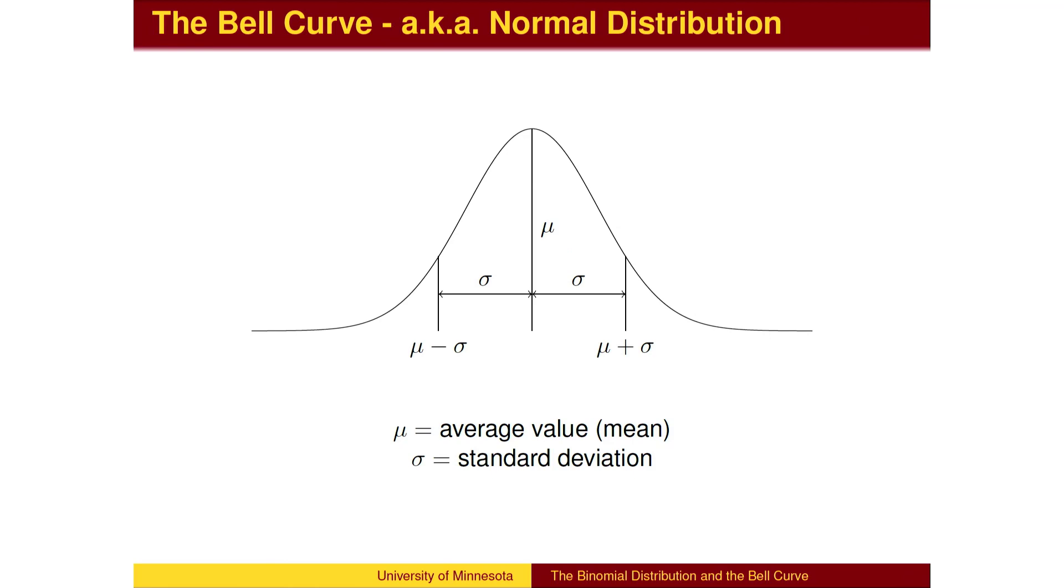The other parameter for the bell curve is the amount that measurements spread out from the mean. This distance is called the standard deviation, and is denoted by the Greek letter sigma. Otherwise, all bell curves have the same shape. They are completely determined by the mean and the standard deviation.